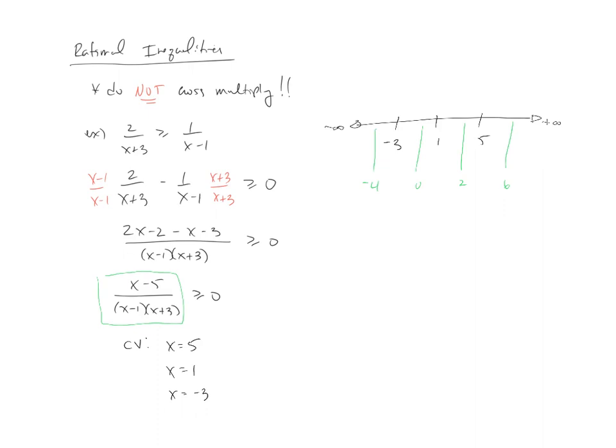If we take the 6, for example, if I put a 6 out of this guy, I'll get a plus, I'll get a plus, I'll get a plus. Pluses all around tell us that we're going to be positive from 5 to positive infinity.